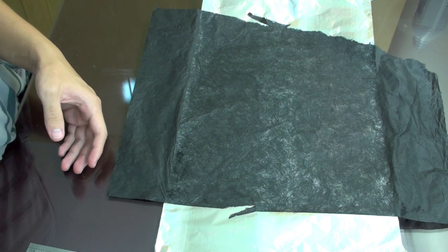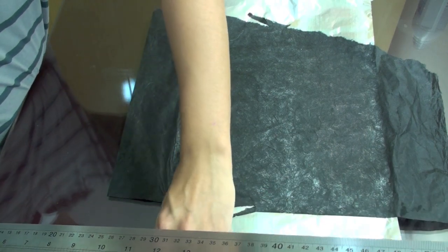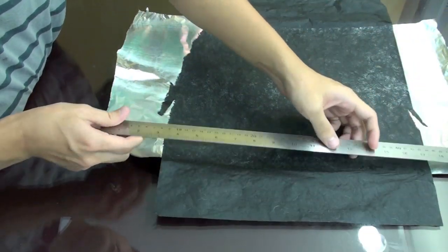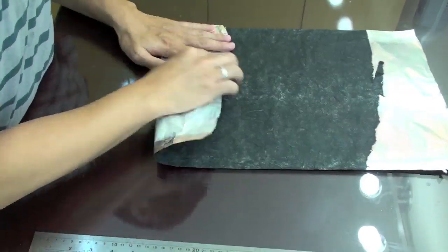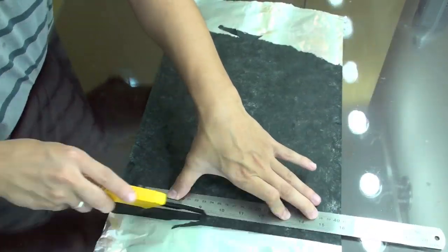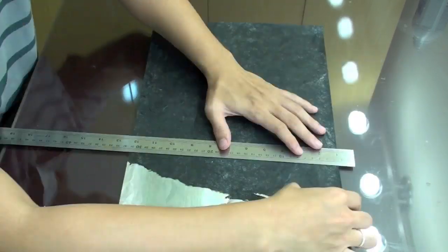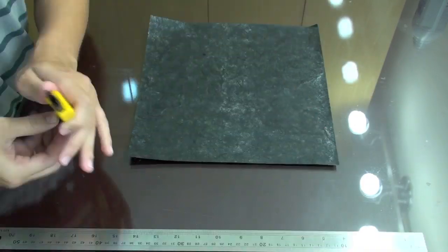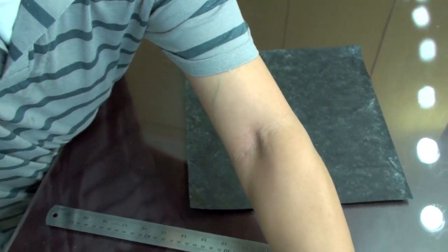So the paper dried, now I just need to cut the paper in a square shape. Okay, so that's it. The paper is ready now.